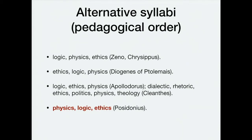Diogenes of Babylon had a pretty good argument saying we've got to do ethics first, because we can't even let these people out on the street until we give them some ethics. Don't teach somebody nuclear physics until you know they're a good person. But Apollodorus, and then Cleanthes in a more detailed version, says the order is logic, ethics, then physics — we need people to be able to reason and be ethical before they learn the physics that is basic to all this.